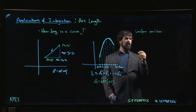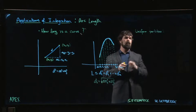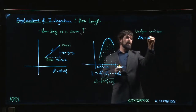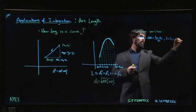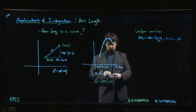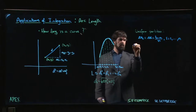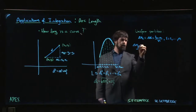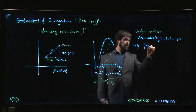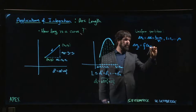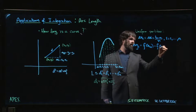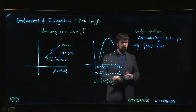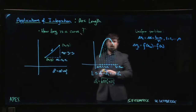With a uniform partition, delta x_i is just delta x, our usual (b minus a) over n, for each i from 1 up to n. And delta y_i is f(x_{i+1}) minus f(x_i) for each i.